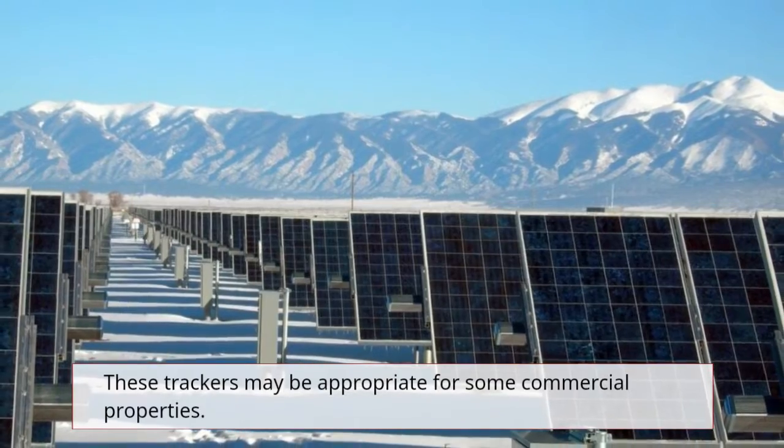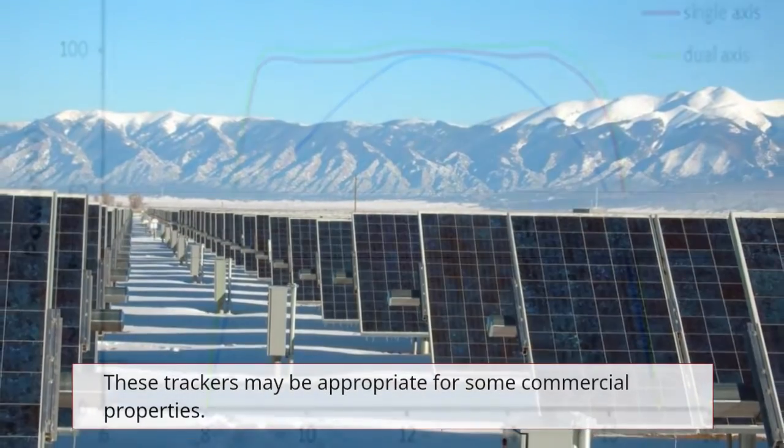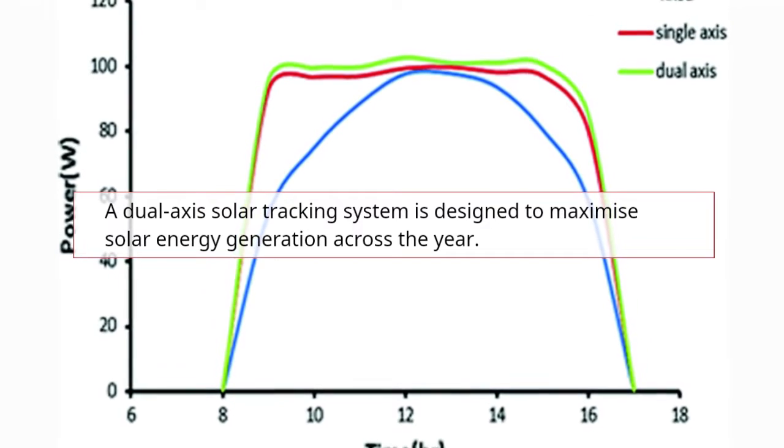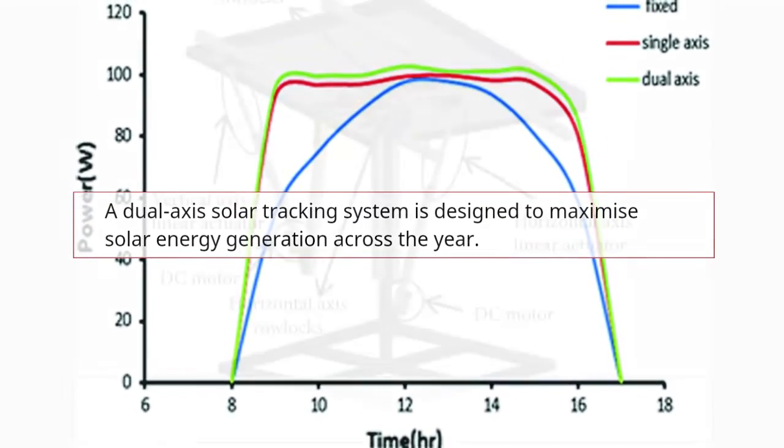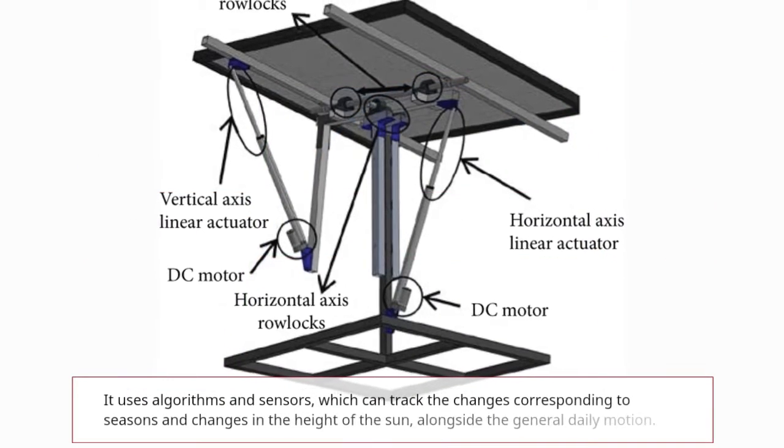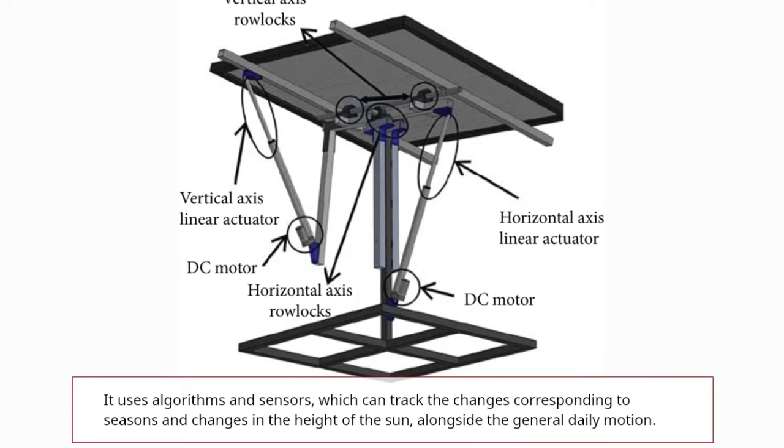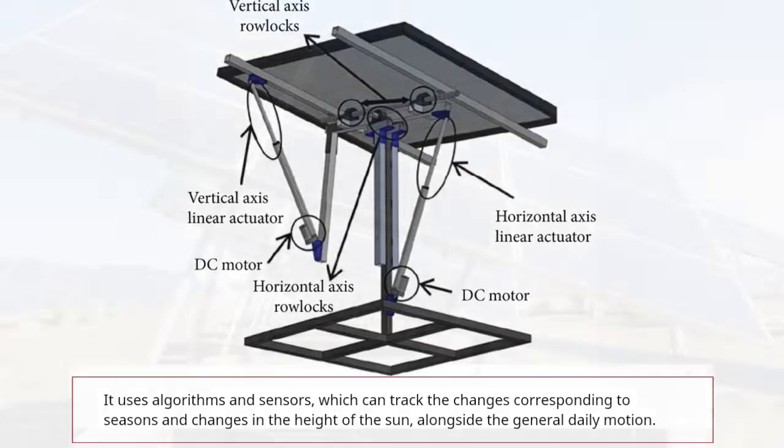These trackers may be appropriate for some commercial properties. A dual axis solar tracking system is designed to maximize solar energy generation across the year. It uses AI algorithms and sensors which can track the changes corresponding to the seasons and changes in the height of the sun alongside the daily motion.